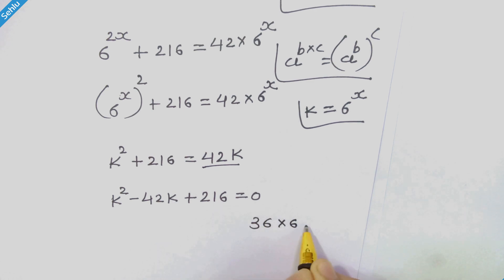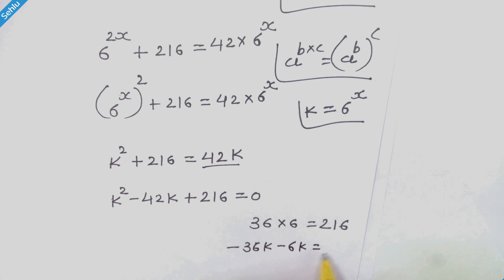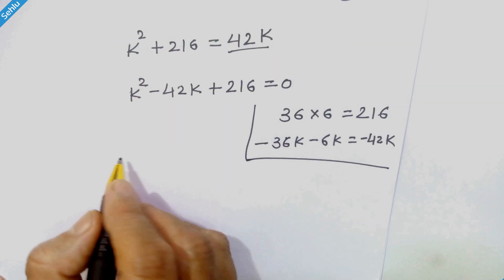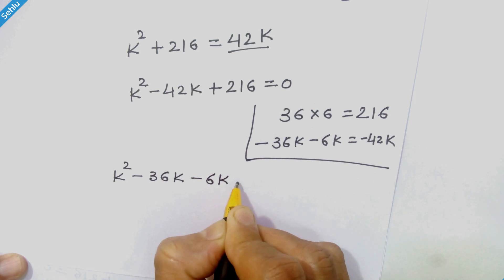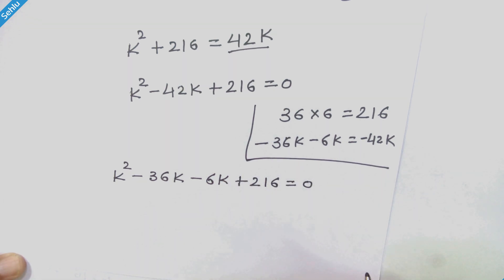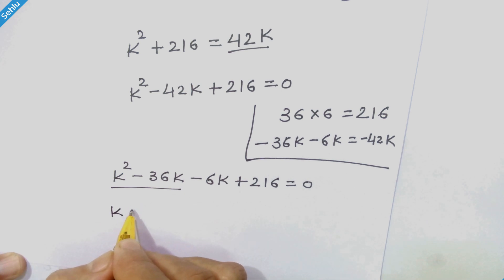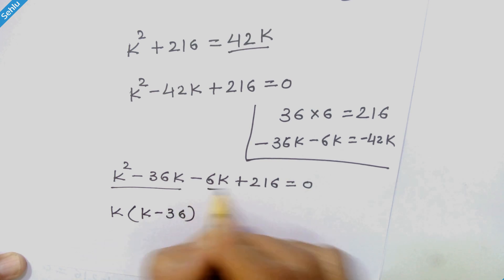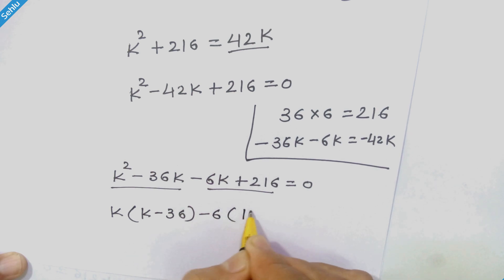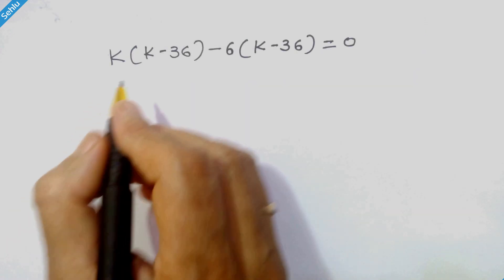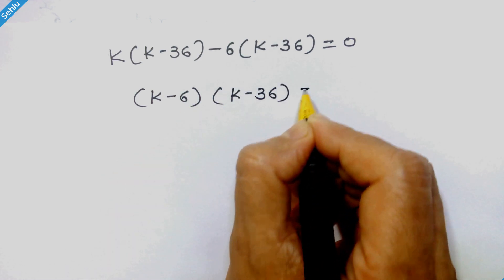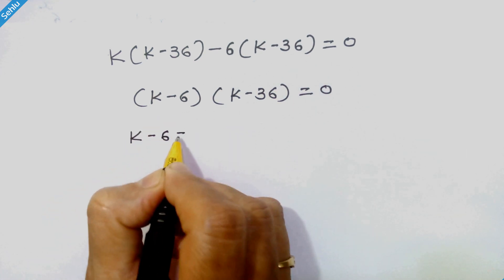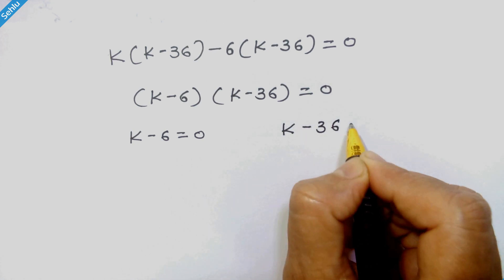It's a quadratic equation and we can factorize it. Note that 36 times 6 is 216, and minus 36k minus 6k is minus 42k. So we factor to get k times k minus 36, plus 6 times k minus 36, equal to 0. This gives us k minus 6 times k minus 36 is equal to 0.